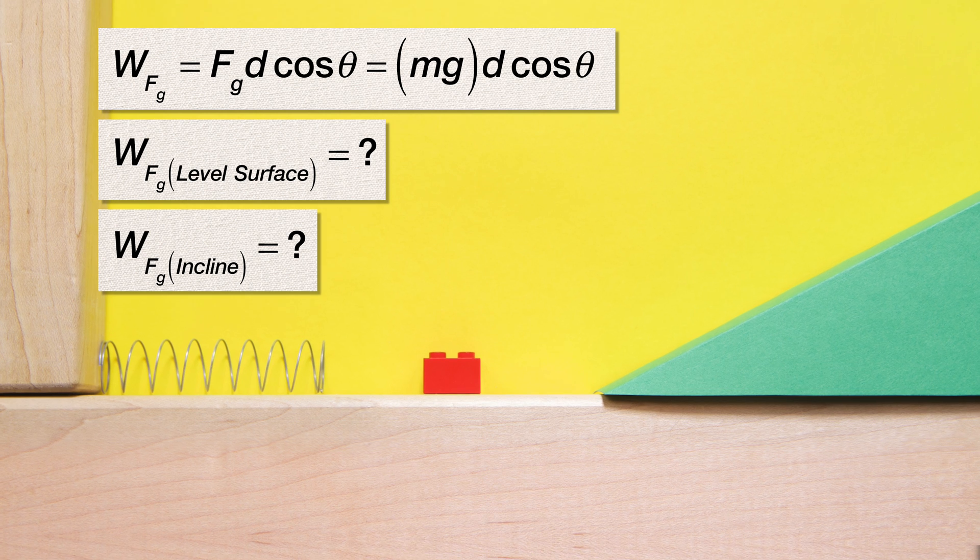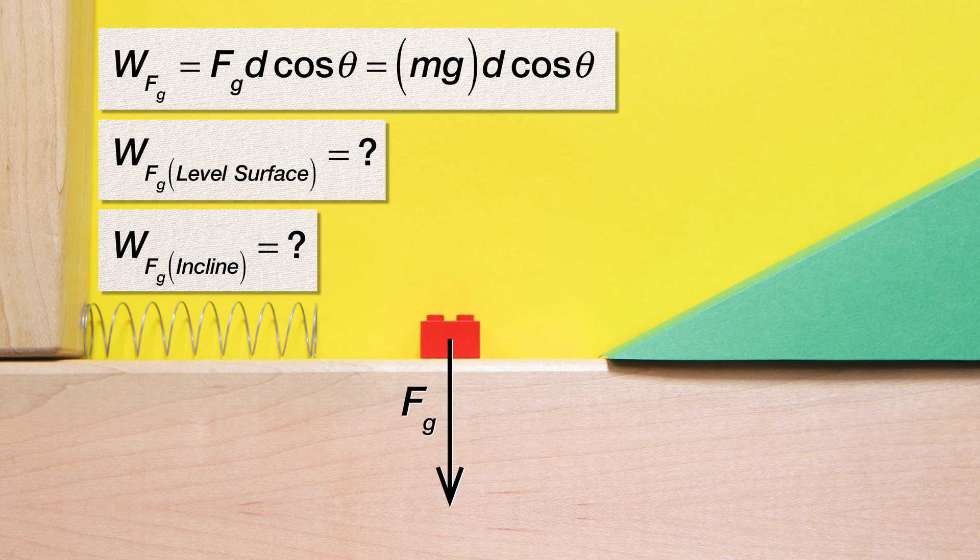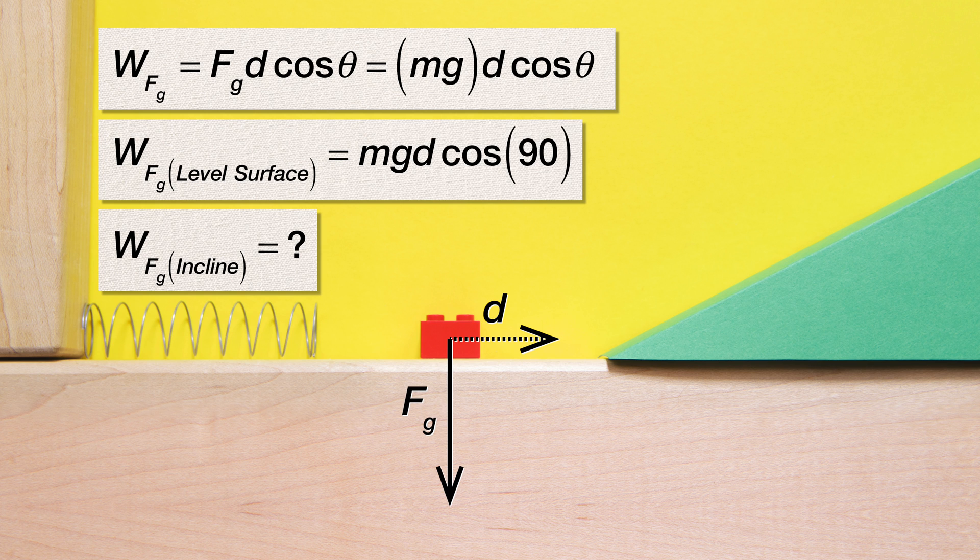Let's start on the level surface. The force of gravity is always straight down and on the level surface, the direction of the displacement of the block is to the right. The angle between down and to the right is 90 degrees and the cosine of 90 degrees is zero. Therefore, on the level surface, the force of gravity does zero work on the block.